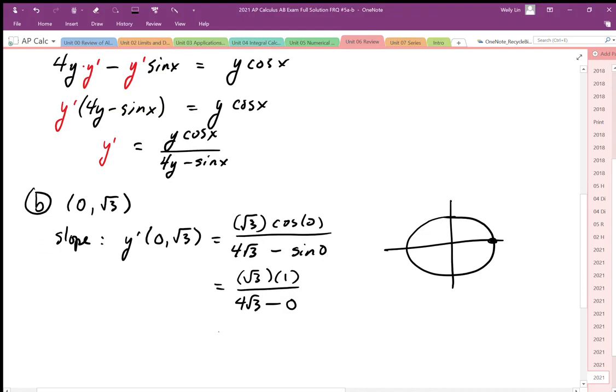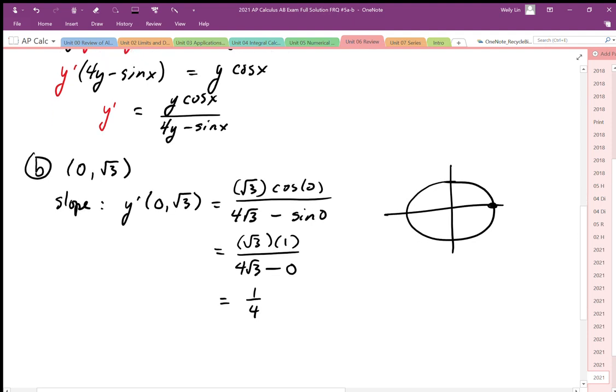So then simplifying this out I get root 3's cancel out so I end up with the slope of positive 1 over 4. Knowing the slope then I can just plug it into the point slope form. So there's my slope and my point at 0 root 3 and I'm just going to leave my answer in the point slope form.